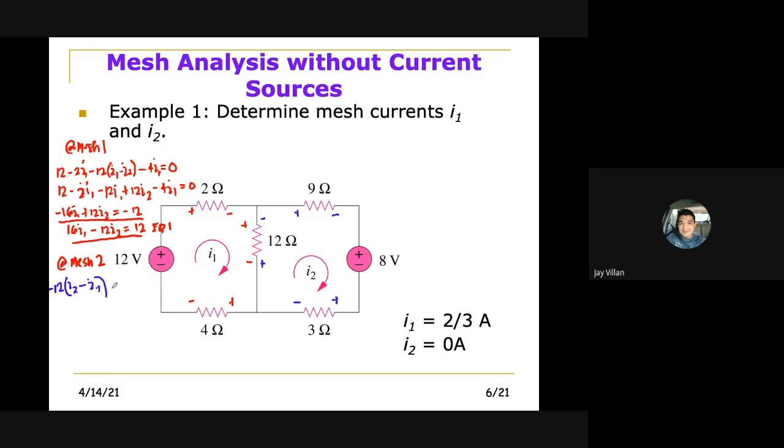So pagdating mo din sa 9 ohms mo, minus 9I2. And this one, so we go out of the negative terminal, so that becomes minus 8. And then here we have minus 3I2 is equal to 0. Simplify.